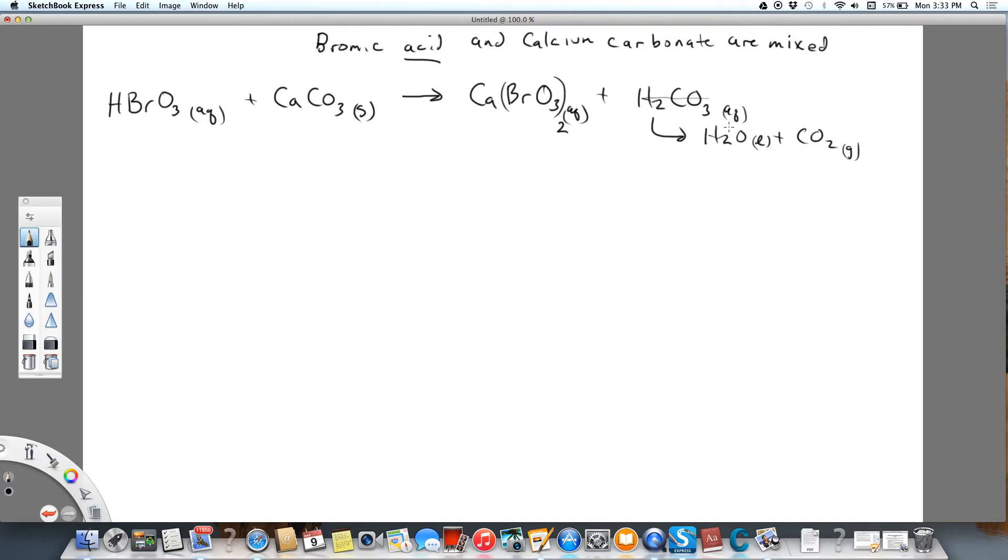We need to balance this, so we're going to put a 2 in front of the bromic acid. Okay, now we can write the total ionic equation. This is a weak acid, so it's going to be written as it is. And calcium carbonate, of course, is a solid, so it stays the way it was given.